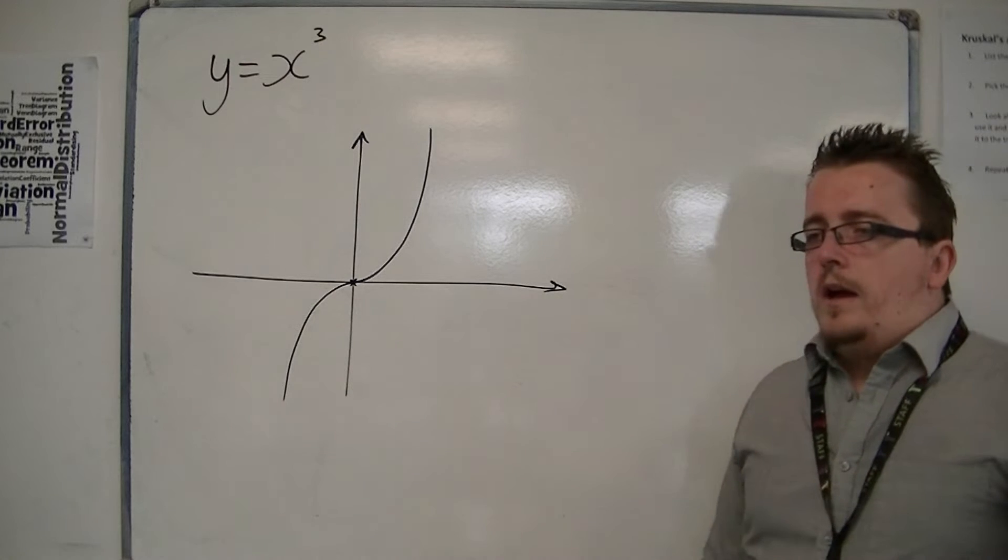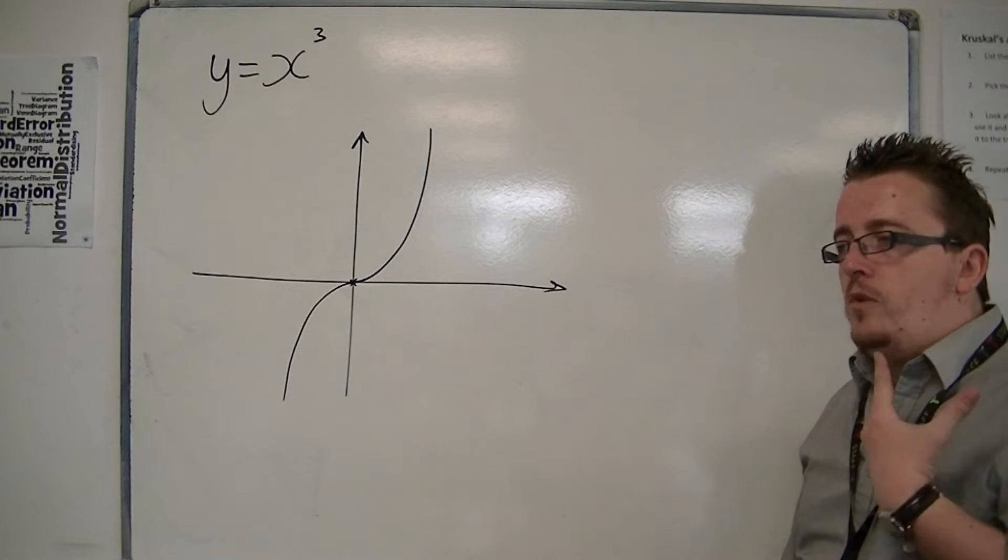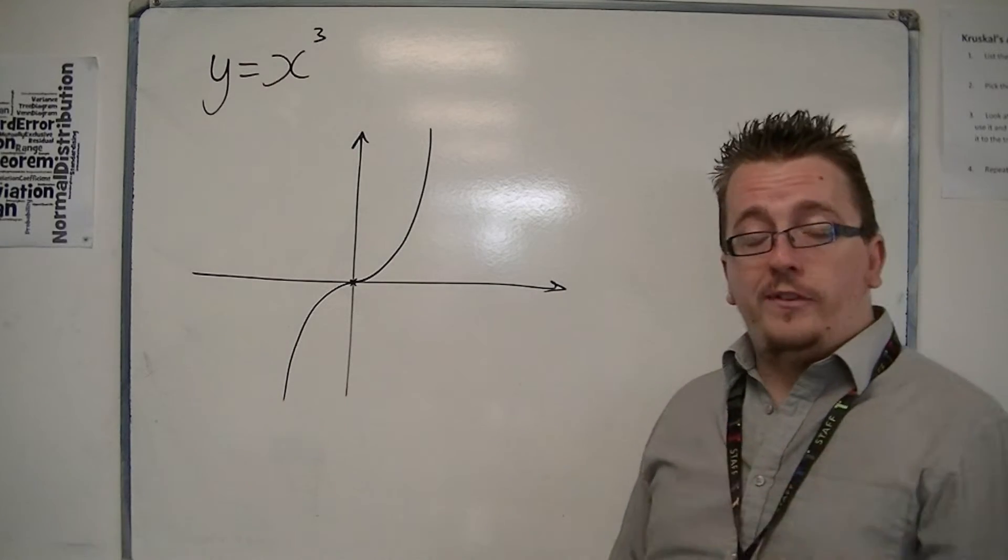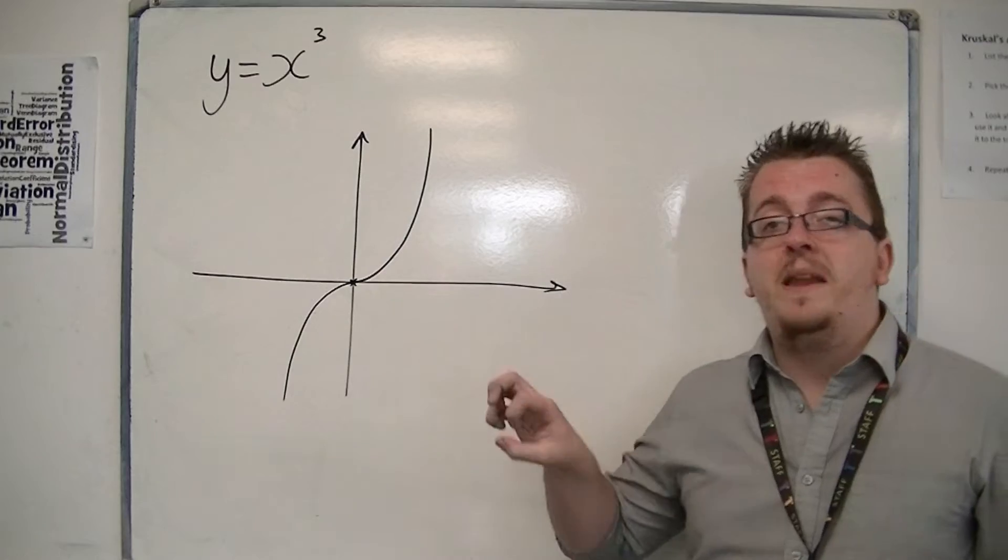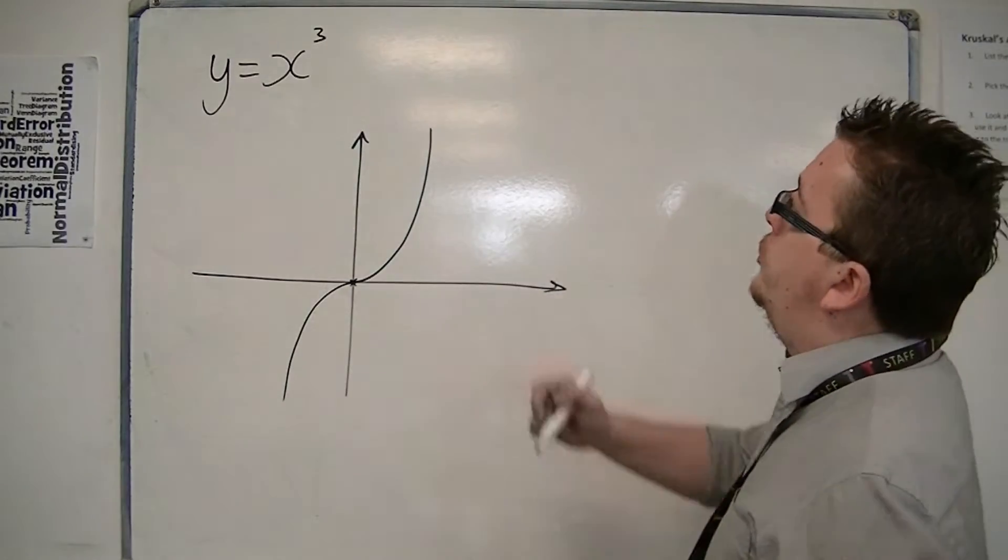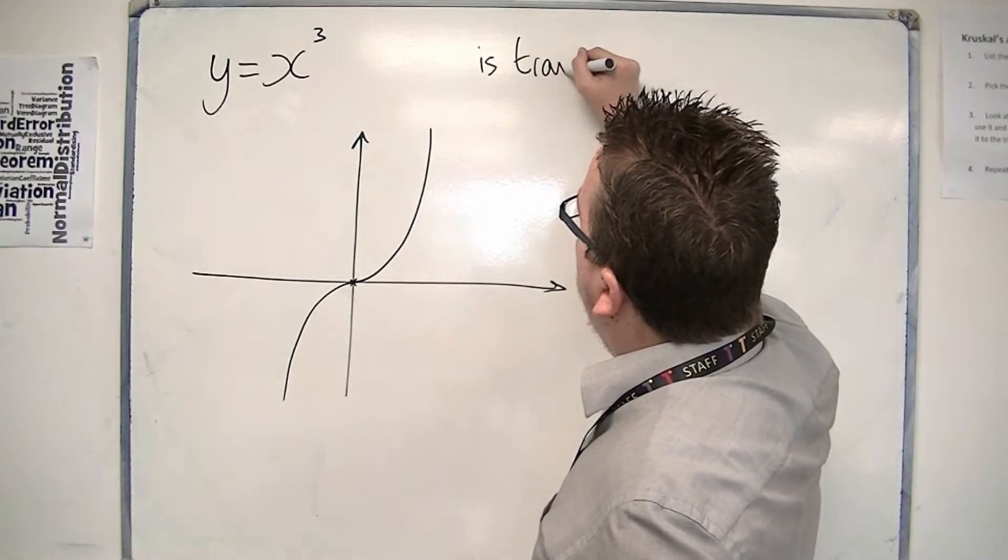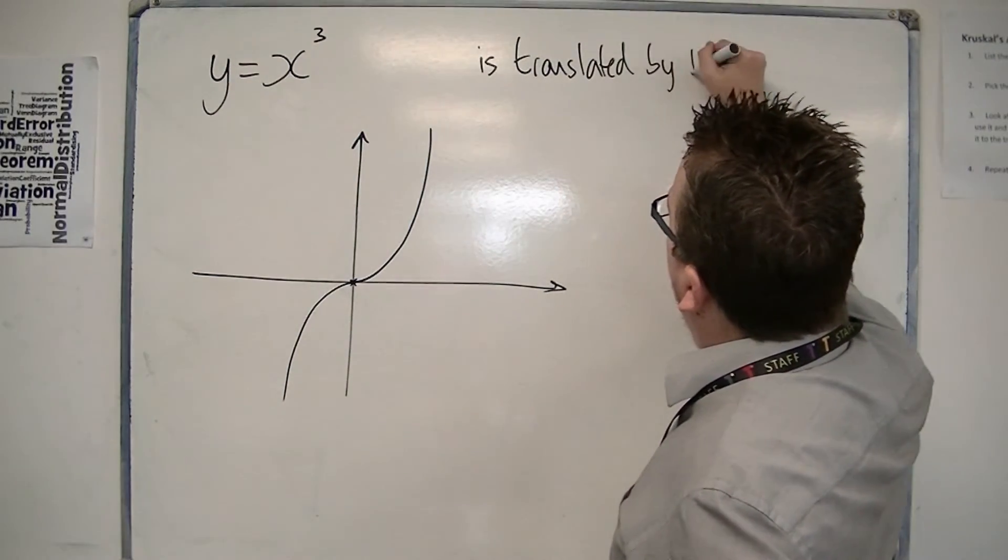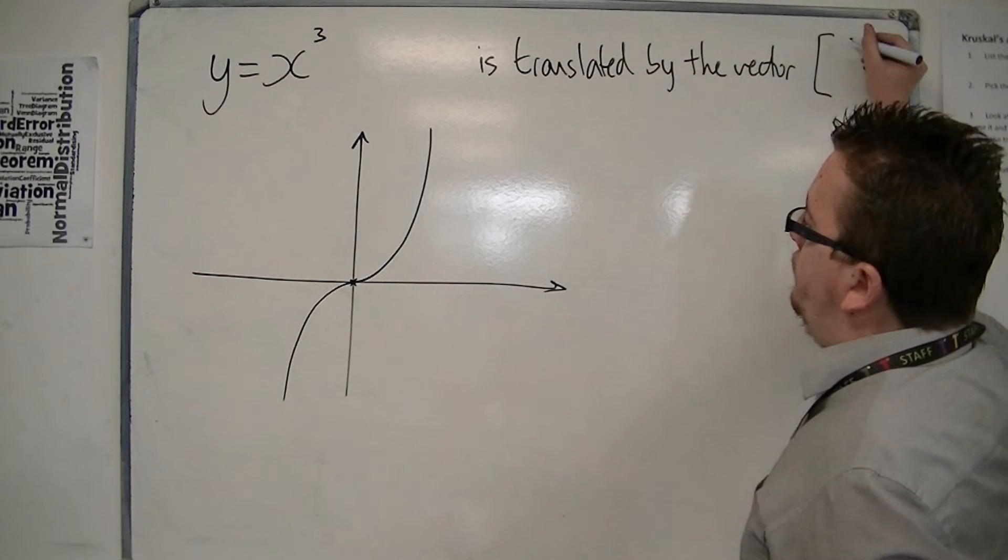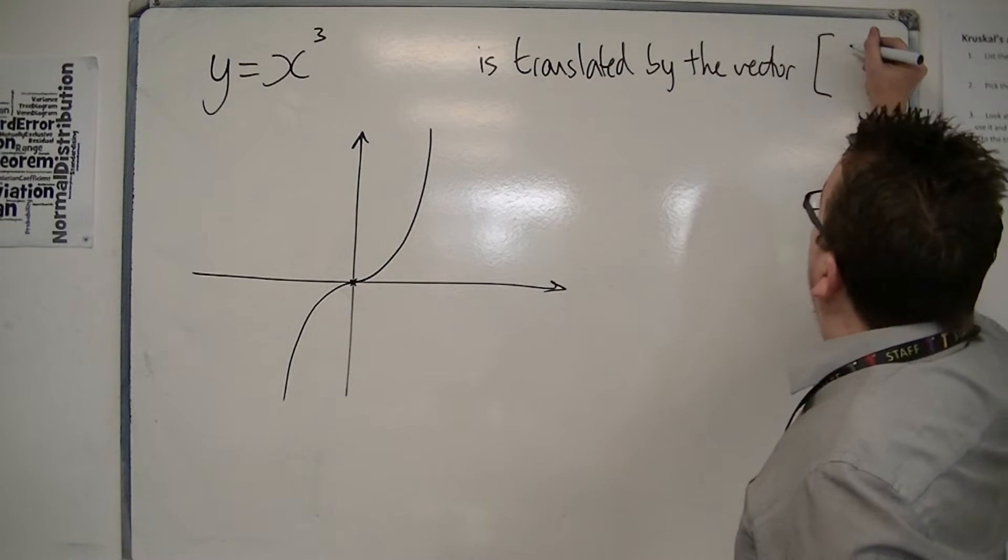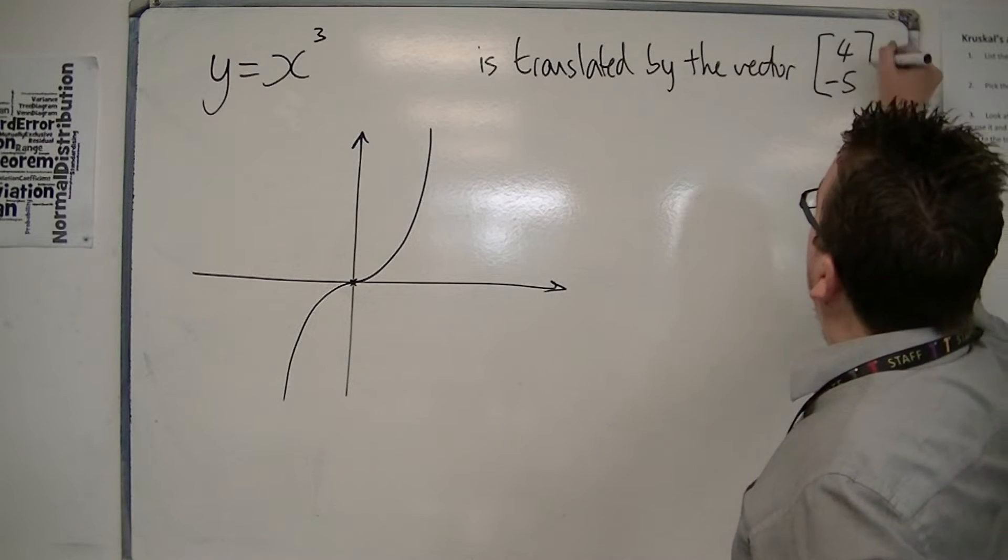Now, when we looked at quadratics, we also did the translation of quadratics. And translation meant effectively picking up the curve and moving it. So you could say it's translated by the vector, let's say, 4 minus 5, for example.